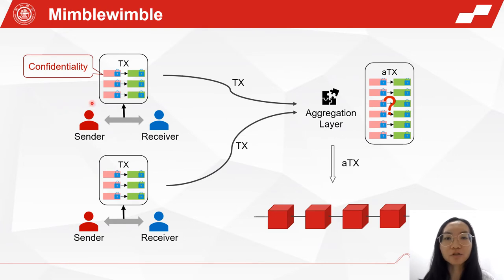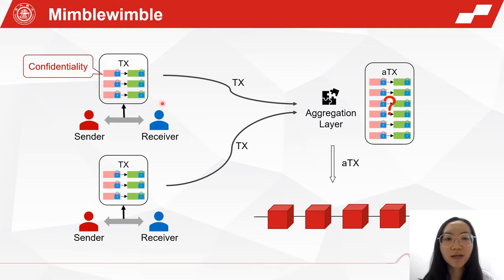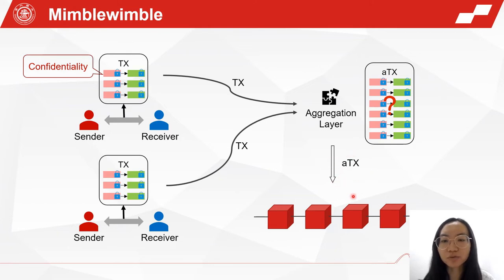MimbleWimble is a solution that uses coin join to break linkability. Besides coin join, MimbleWimble also uses Pedersen commitments to achieve amount confidentiality. More specifically, in MimbleWimble, the sender and the receiver interact to generate a transaction and send the transaction to the aggregation layer. These transactions are then aggregated into a big aggregate transaction, and the aggregate transaction is submitted to the ledger.